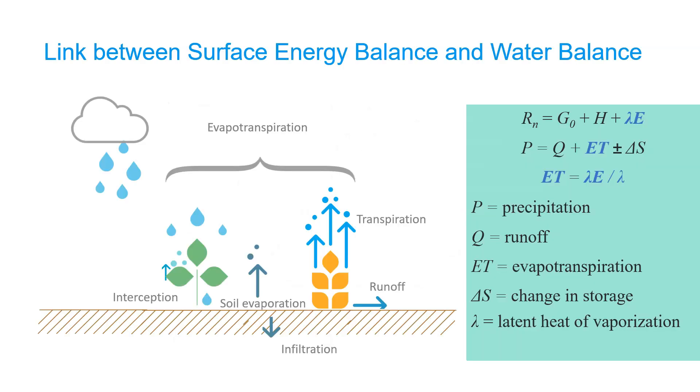From the previous slides, we can now conclude that there is a clear link between the surface energy balance and the water balance. In the calculation of net radiation, we sum up the soil heat flux, the sensible heat flux, and the latent heat flux. That latent heat flux is controlled by the moisture. And that relates to the water balance equation where the precipitation equals the runoff plus the evapotranspiration plus or minus the change in storage. The evapotranspiration is the latent energy divided by the latent heat of vaporization, which provides a clear link between the two equations.